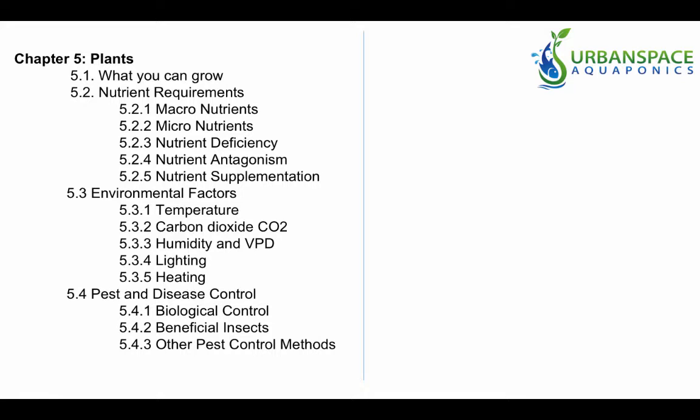Chapter 5 is the largest chapter and covers a lot on plants, starting with what you can grow, nutrient requirements, what to look for, and what measures to take to have healthy plants, as well as environmental factors and how they affect plant health.